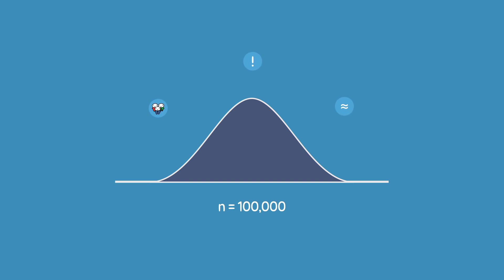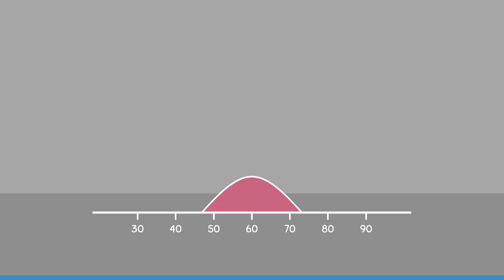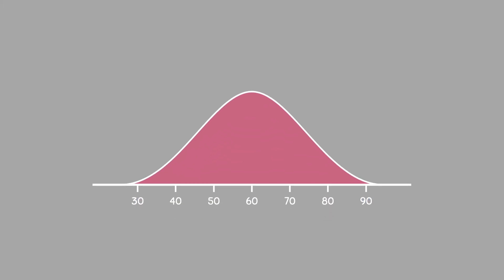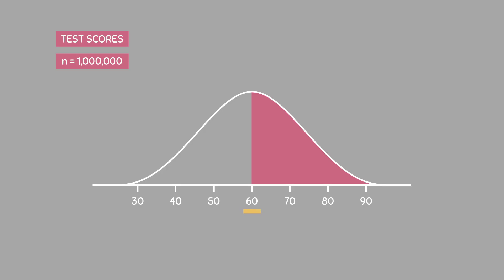We can also use density curves to make approximations. For example, if we have a density curve representing the test scores of 1 million people, by looking at the curve we can say that half of the people scored over 60 on this test. We can also say that a large majority of students scored between 50 and 70, because there is a lot of area contained within this region. And only a few students did very well on this test, because there is only a small amount of area in the upper tail region of the curve.